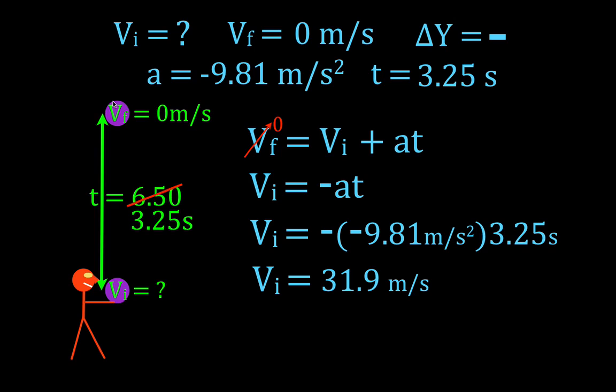Simply multiply those two together and you get the initial velocity needed to achieve a time in the air of 6.5 seconds. You don't double this or something like that, is 31.9 meters per second. Okay? There you go.